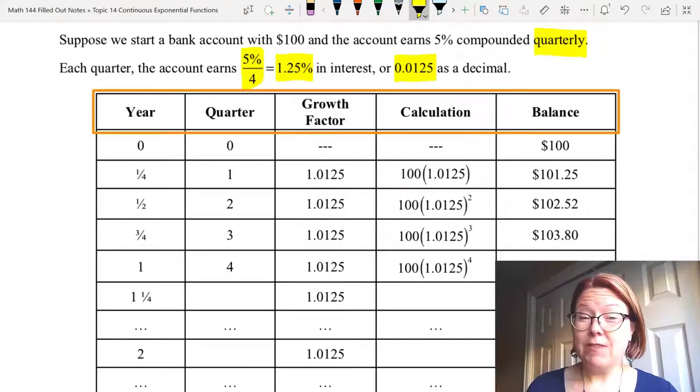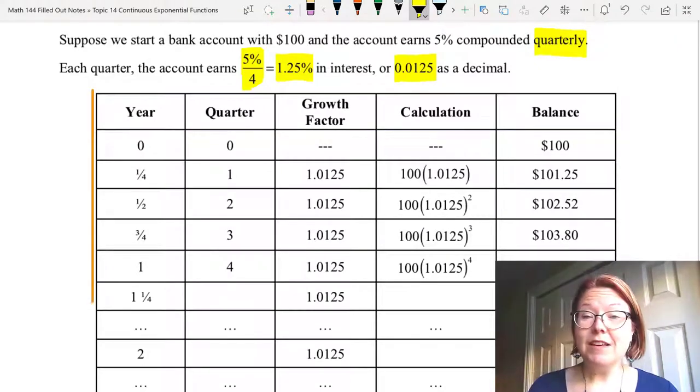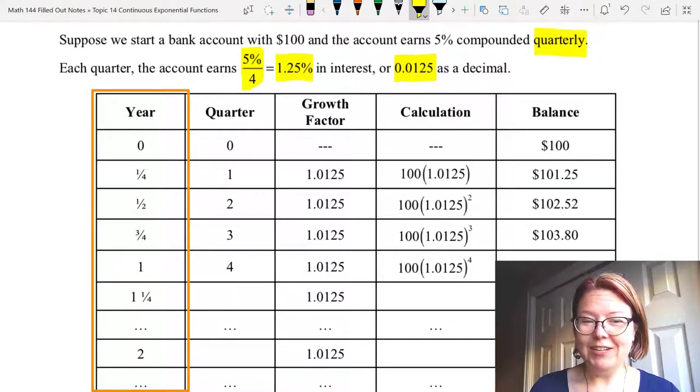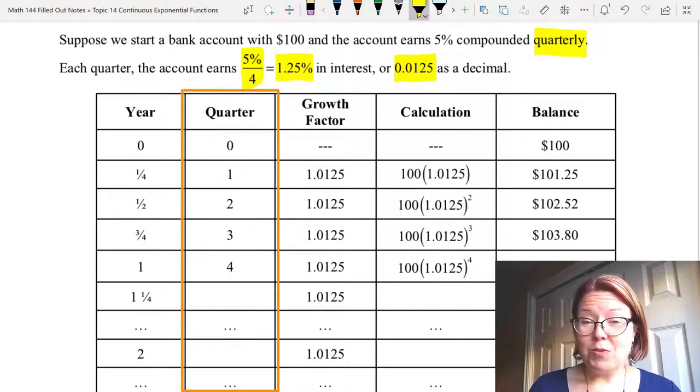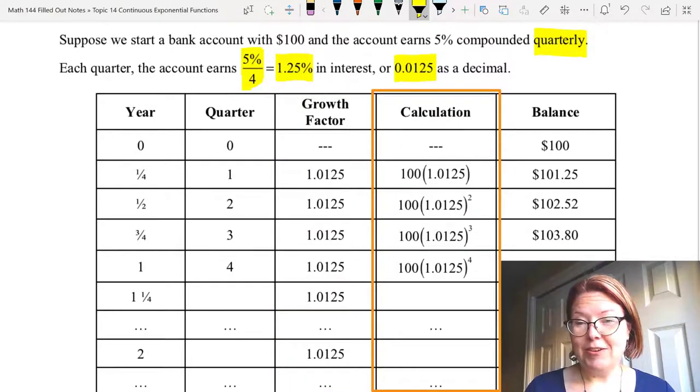This table has five columns: the year, the quarter, the growth factor, our calculation, and the balance. In the year column, we start with year zero, then a quarter of a year, half a year, three quarters of a year, one year, etc. For quarters, we start with quarter zero, then 1, 2, 3, 4, etc. The growth factor, as I mentioned, is always 1.0125. And let's take a look at the calculations.